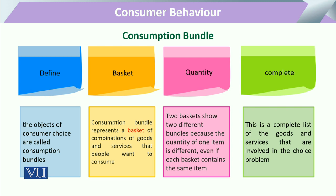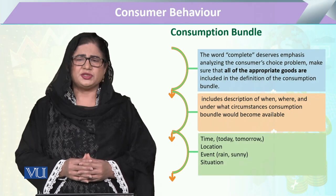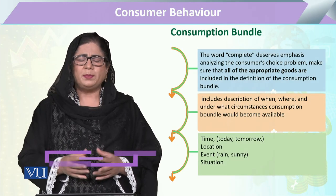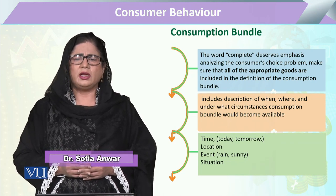اسی طریقے سے اگر کسی bundle میں ایک چیز کی تعداد بڑھ جائے — پانچ کی بجائے چھے ہوں اور دوسرے میں پانچ اشیا ہوں — تو جب quantity different ہوگی تب بھی ہم اسے separate basket کے تحت لیں گے۔ جب بھی ہم نے اسے لینا ہو تو ہماری ایک term ہے جسے ہم 'complete' کہتے ہیں۔ یہاں complete سے مراد صرف commodities اور services کی فہرست نہیں ہے۔